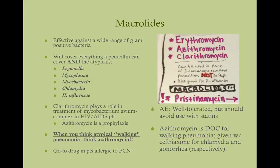Macrolides are effective against a wide range of gram-positive bacteria — similar to penicillins, but they do everything a penicillin does and a little bit more. Macrolides are the go-to drugs when a patient is allergic to penicillin. For example, if a patient is allergic to penicillin and gets strep throat or an ear infection, rather than amoxicillin, you give them azithromycin. The extra coverage macrolides provide is against atypicals.